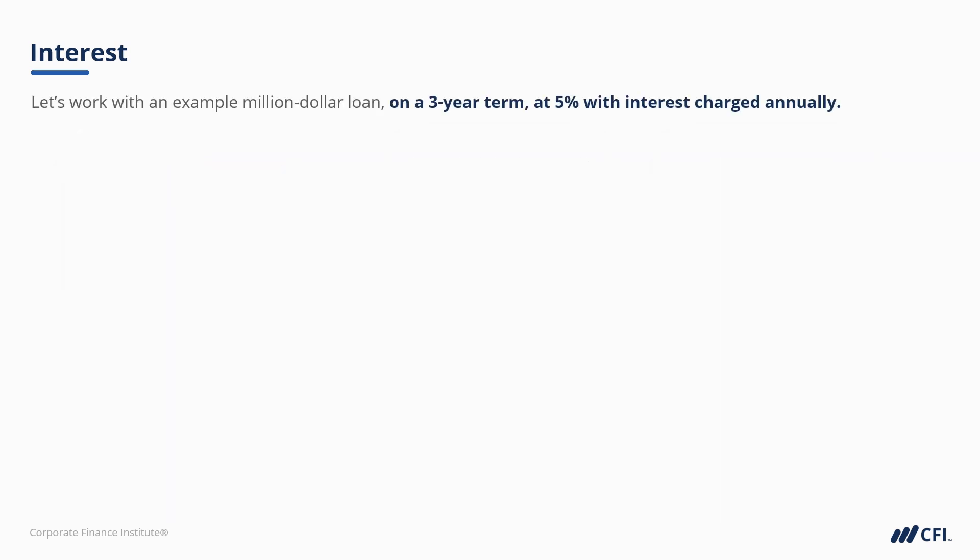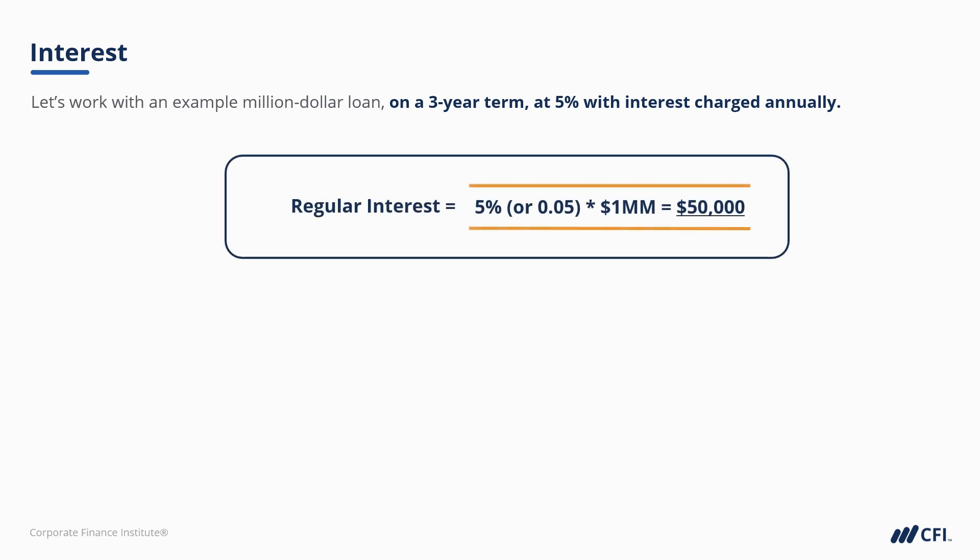To illustrate the different types of interest, let's work with an example: a $1 million loan on a 3-year term at 5% interest, with interest charged annually and no principal repayments — the entire principal amount is due at the end of year 3. If this is a regular interest loan, then a cash payment is made at the end of each period — at the end of year 1, year 2, and year 3. For our example borrower, that means a $50,000 cash payment (0.05 times $1,000,000 equals $50,000) at the end of each year.